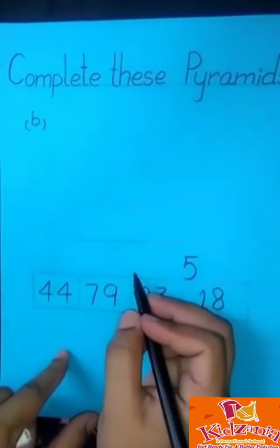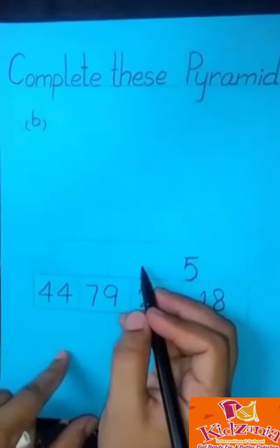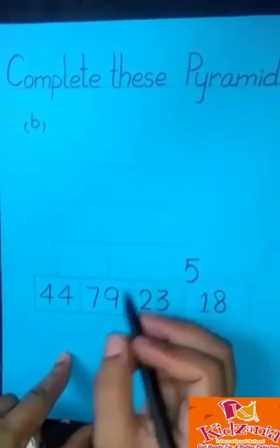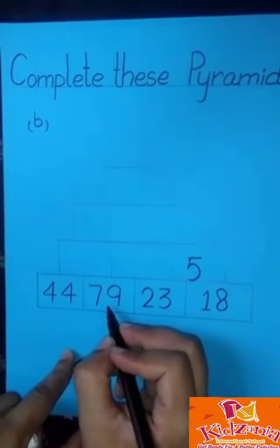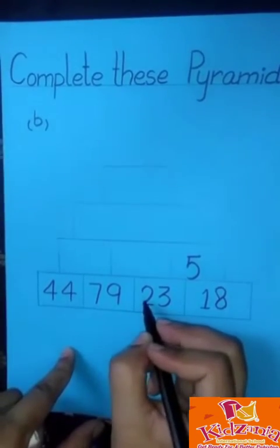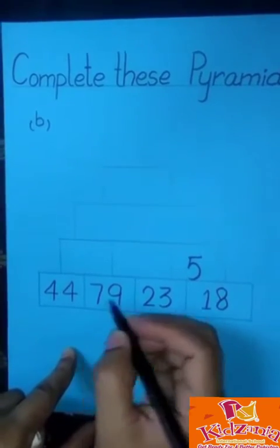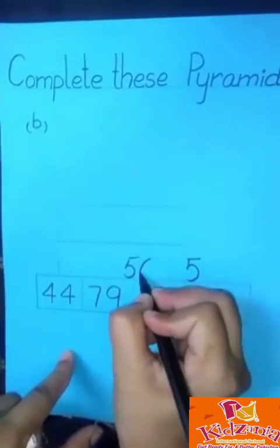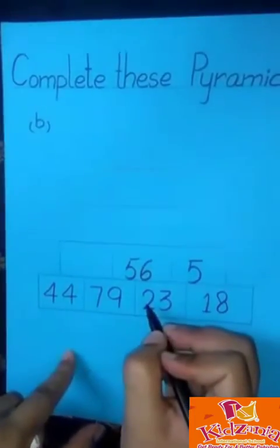Okay students, now let's start to solve the second box of this row. How to solve the box? We subtract 79 by 23. When we subtract 79 by 23, we get the answer of 56. 56 is the right digit.